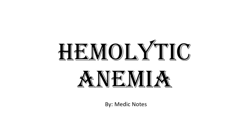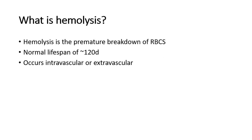Welcome back to another video of Medic Notes. This video will be on hemolytic anemia. Hemolysis is the premature breakdown of red blood cells before their normal lifespan, which is around 120 days. It can occur in the blood circulation, called intravascular hemolysis, or it can occur in the reticuloendothelial system — for example, in macrophages of the liver, spleen, and bone marrow — what we call extravascular hemolysis.